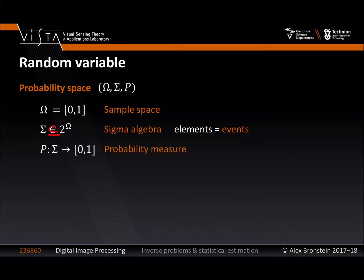The most important part of the probability space is a map — a function — from the sigma algebra to the interval [0, 1]. This map assigns probabilities to events and is called the probability measure. It is actually a measure from the perspective of measure theory. This probability measure quantifies probabilities of events. If I plug in a set not in the sigma algebra, it gives no result because it is not defined on anything but an event. This is called the probability space, but it is cumbersome to work with these three objects directly.